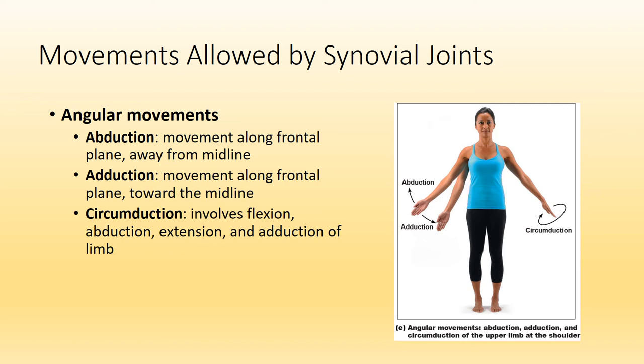Moving on to a different angular movement — we have abduction and adduction. Abduction means taking away from the midline; think of an alien abduction, you are taking away from something. If your arms are down by your side, raising them up and out is abduction, and this occurs along the frontal plane. Adduction means adding to the body — if your arms are out by your sides, dropping them back down is adduction. Circumduction involves making a cone shape or circle in the air and combines all of the following: flexion, abduction, extension, and adduction. It can occur with both the upper and lower limb.